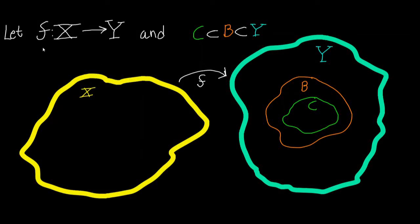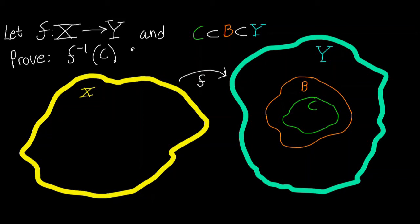Suppose we had a function f that mapped from some set X to some set Y. Suppose also that the set C was a subset of the set B, which is a subset of the set Y. Our goal is to prove that the inverse image under f of the set C is a subset of the inverse image of B under f.